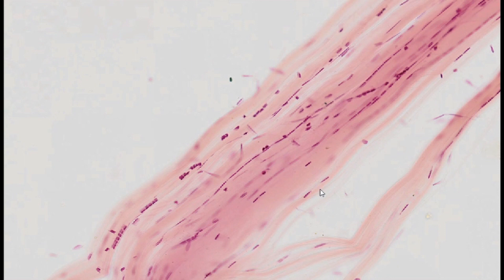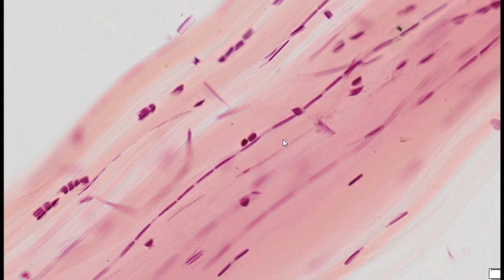The specimen is an isolated tendon stained with routine histological H&E staining. This method does not allow visualization of the cross-striation pattern characteristic of collagen, which is only visible in electron microscopy.